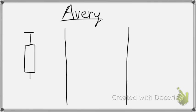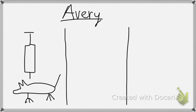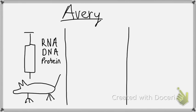Avery decided he could conduct that experiment again, but Avery's experiment took place a decade and a half later. So we knew more about molecules than Griffith did. And Avery decided that there were really just three molecules that could potentially be large enough to store all of our genetic information: RNA, DNA, and protein.